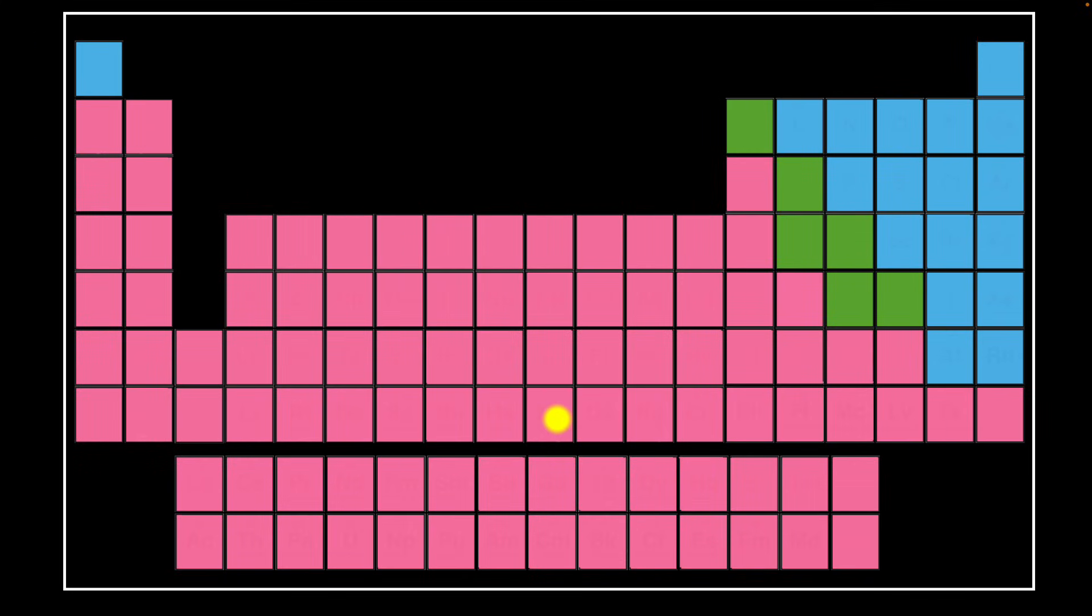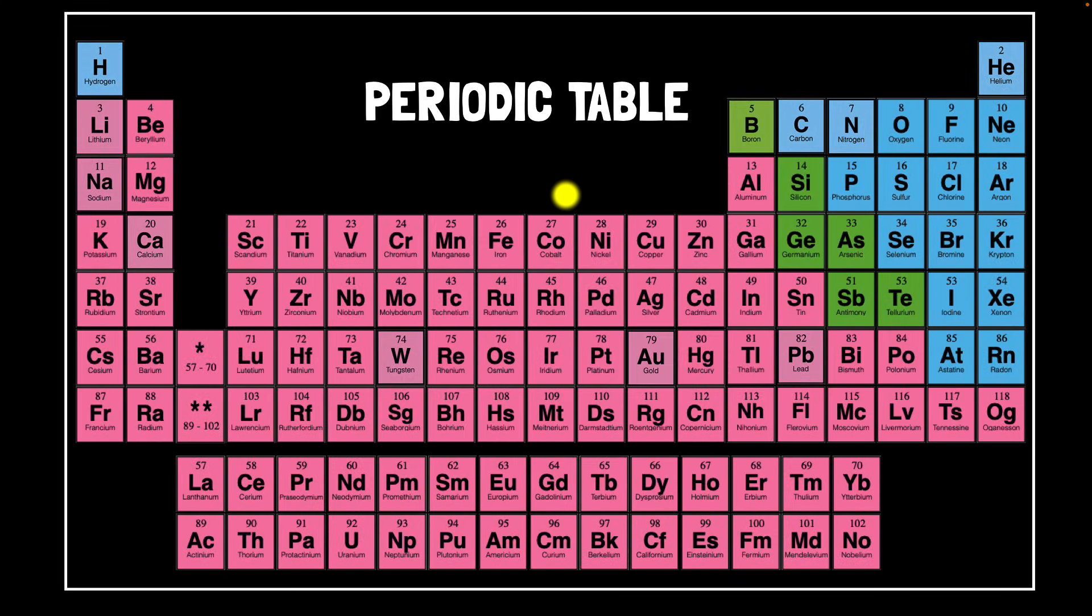We arrange these elements in this particular form and we call this the periodic table. It might seem daunting at first, but let's look at it, okay? So first of all, you can see that each element gets a square and a number. So element number one is hydrogen. Element number two is over here, helium. Element number three is lithium. Element number four is beryllium and so on and so forth.